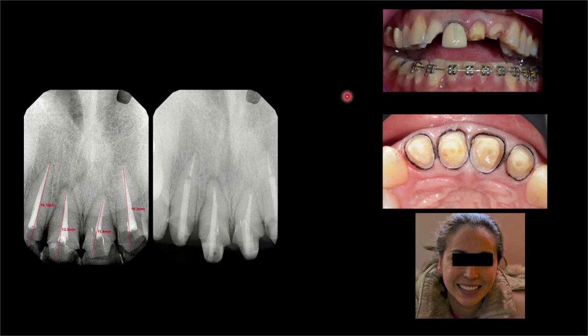Al analizar su historia clínica nos damos cuenta que es una mala paciente para nosotros, para el consultorio dental. Refiere que lleva más de ocho años con tratamiento de ortodoncia, sin que se los quiten ni activen. Se dio el tiempo para venir porque no tiene sonrisa, porque todo lo rompió. Esta corona está desajustada y al parecer traía otra igual en el otro central.